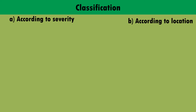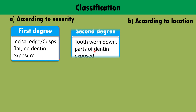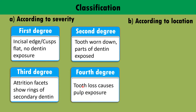We classify attrition in two ways: according to severity and according to location. According to severity — first degree: incisal edges and cusp depths become flat but no dentine exposure results. Second degree: the tooth is worn down and parts of dentine are exposed. Third degree: attrition facets show rings of secondary dentine. Fourth degree: tooth loss causes pulp exposure.